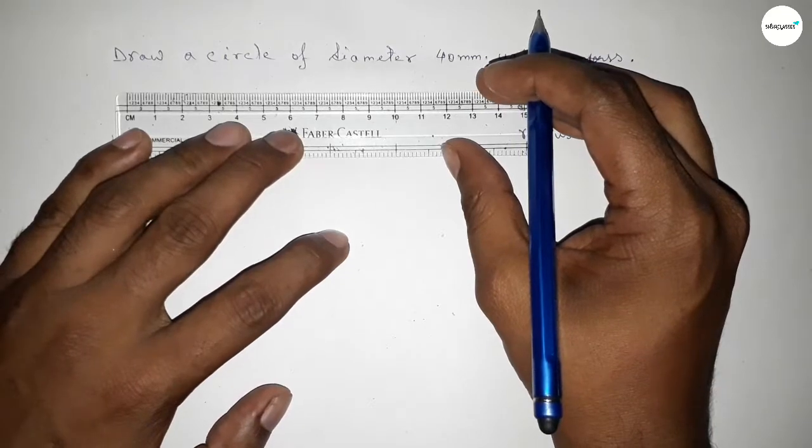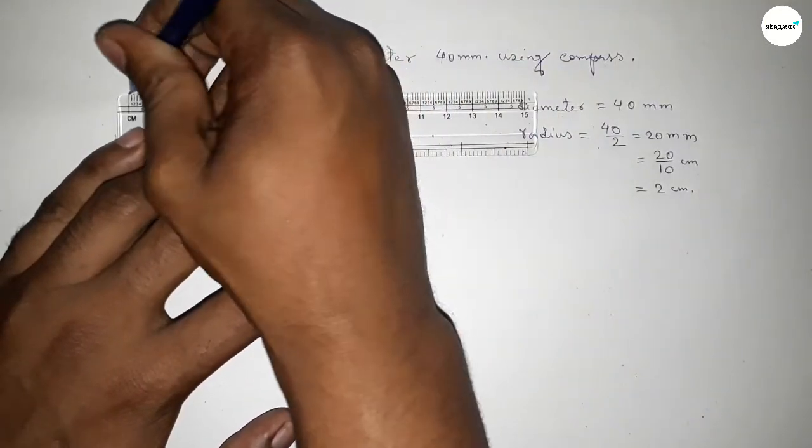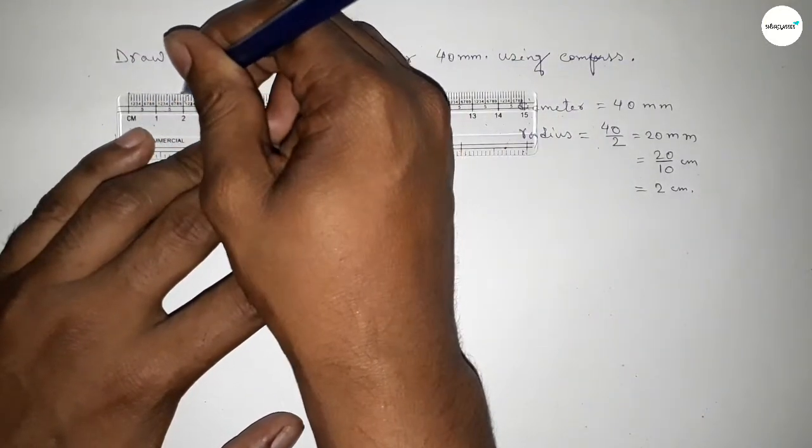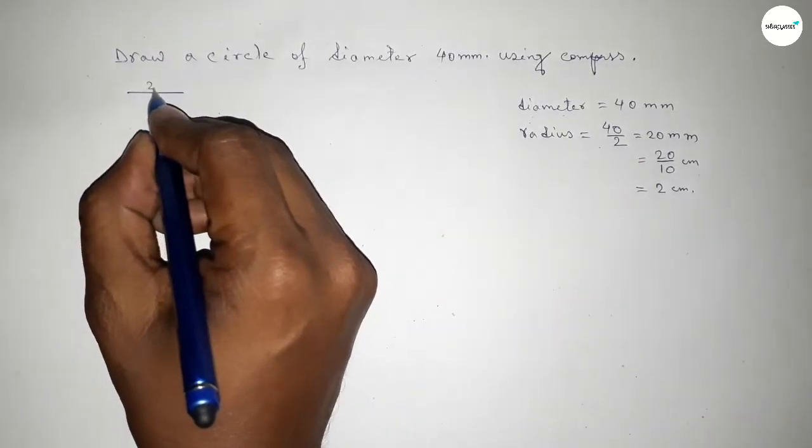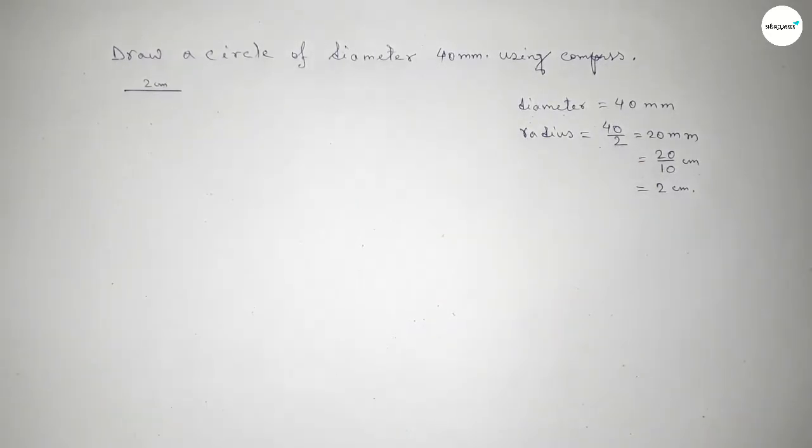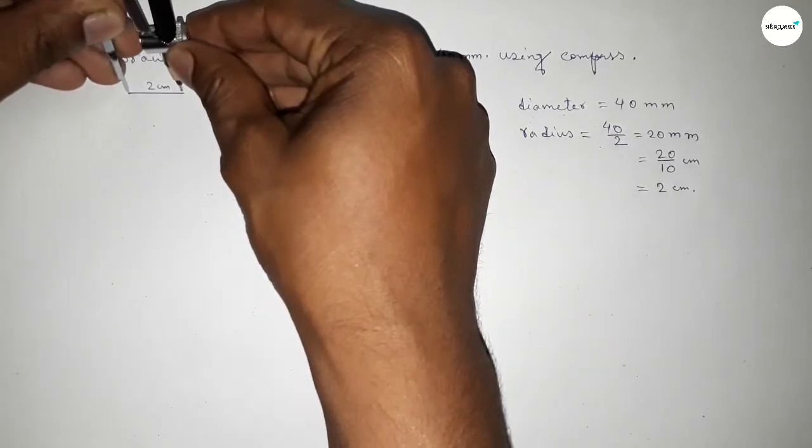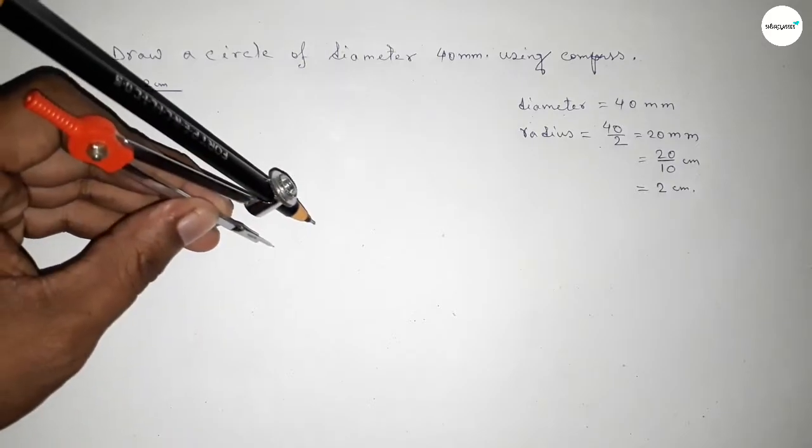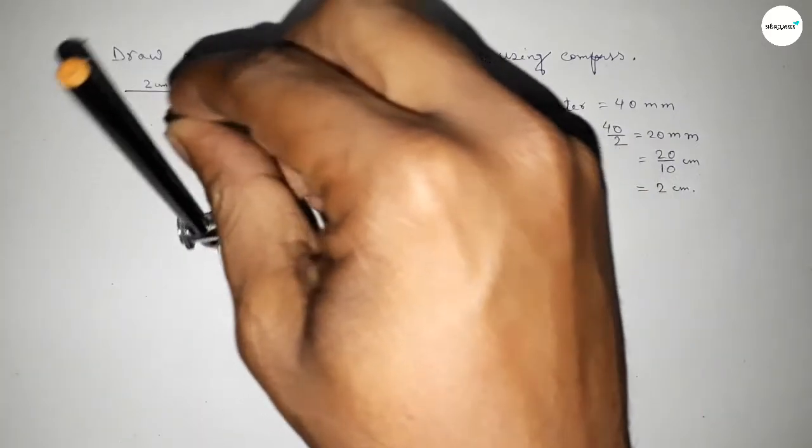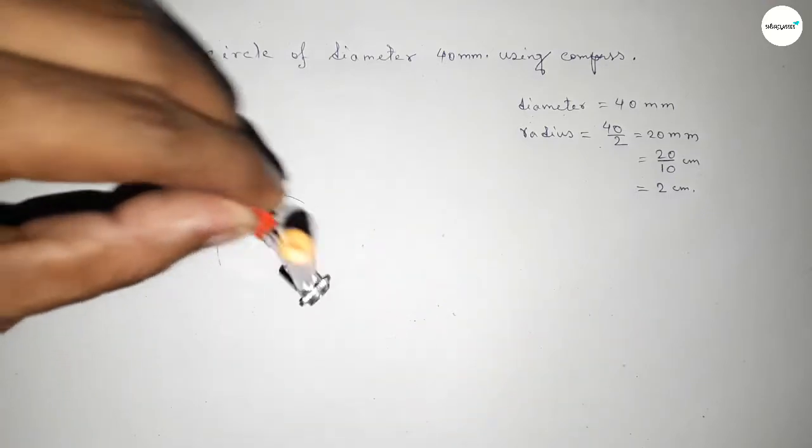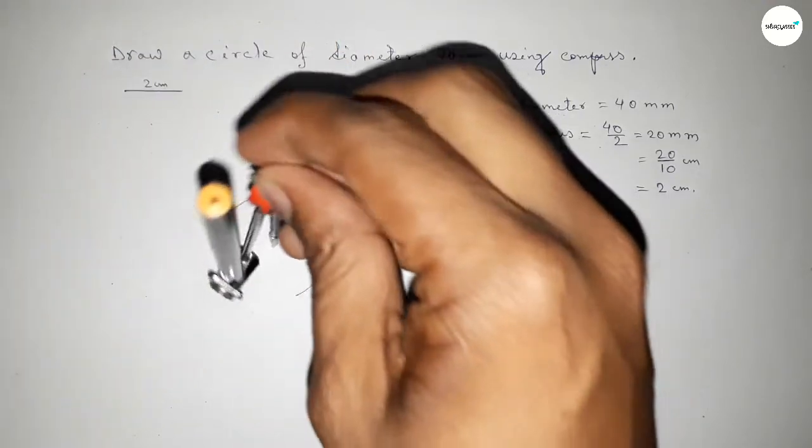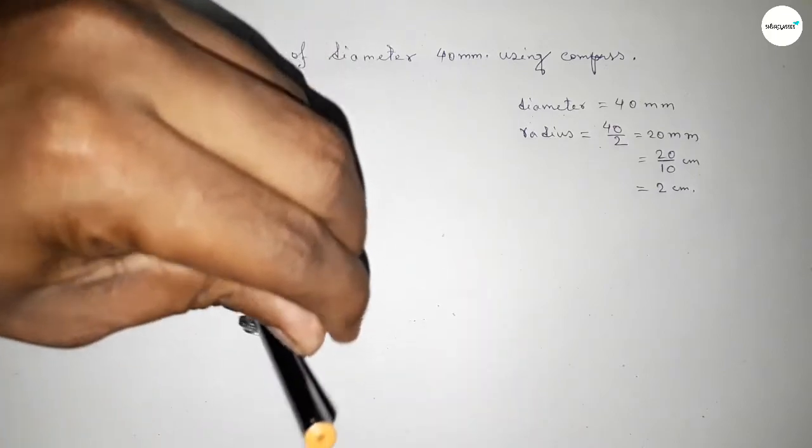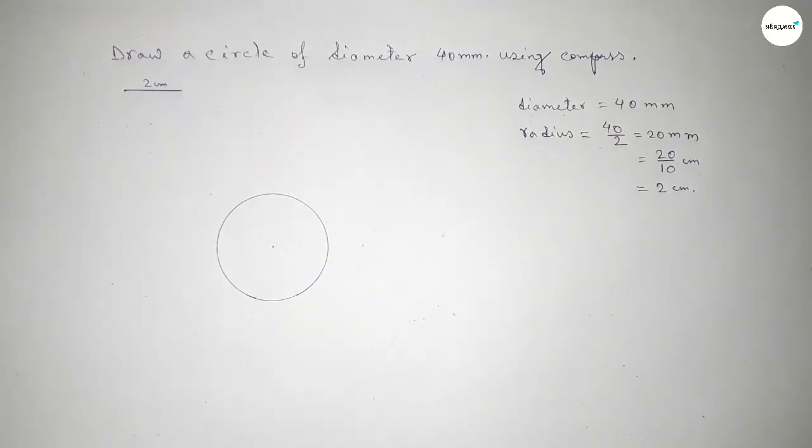Now first we have to draw here a line of length 2cm. So this is 2cm. Now taking here any point, now taking the length 2cm by using compass by this way and putting the compass here on the point. And now drawing here an arc by this way and it represents a circle.